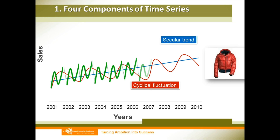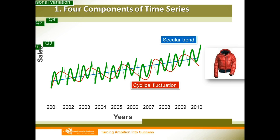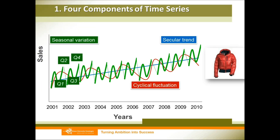Within each year, our product is sensitive to the seasons, so different seasons have different sales amounts. Like for winter clothes, in winter or autumn the sales increase, while in spring and summer the sales decrease. We call this seasonal variation.